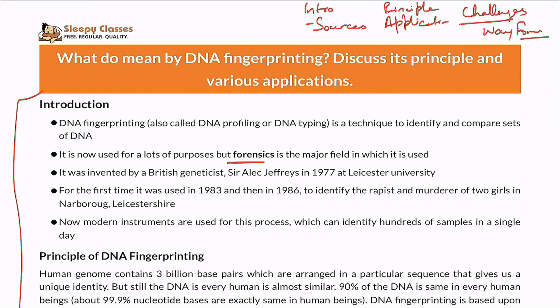Regarding its invention, the British geneticist Sir Alec Jeffries developed this technique in 1977 at Leicester University. Then in 1983 and 1986, it was used in Leicestershire to identify the rapist and murderer of two girls in Leicestershire. In modern times, with advanced instruments, we can analyze DNA much more efficiently, and significant progress has been made in this field.